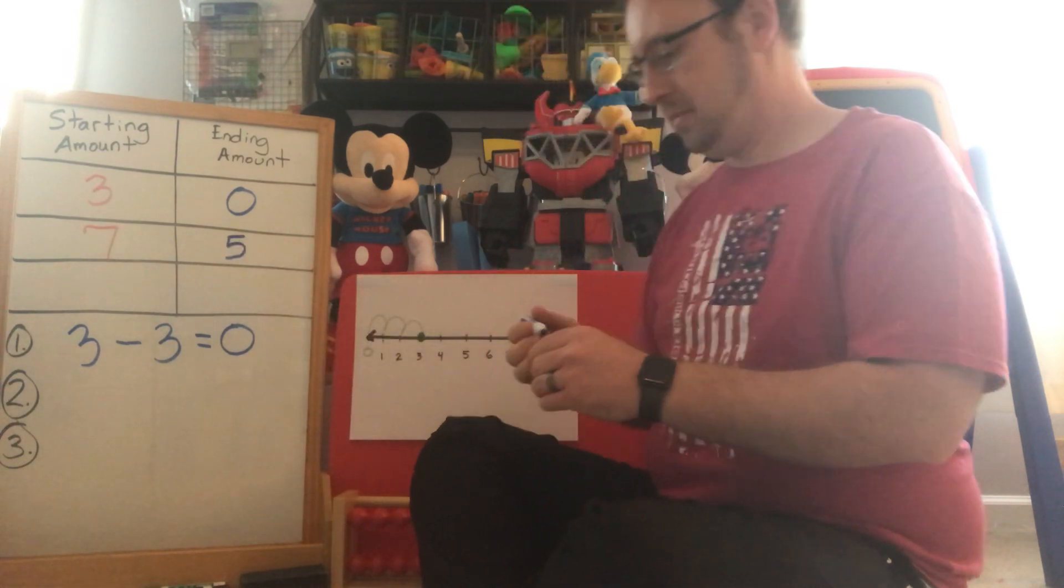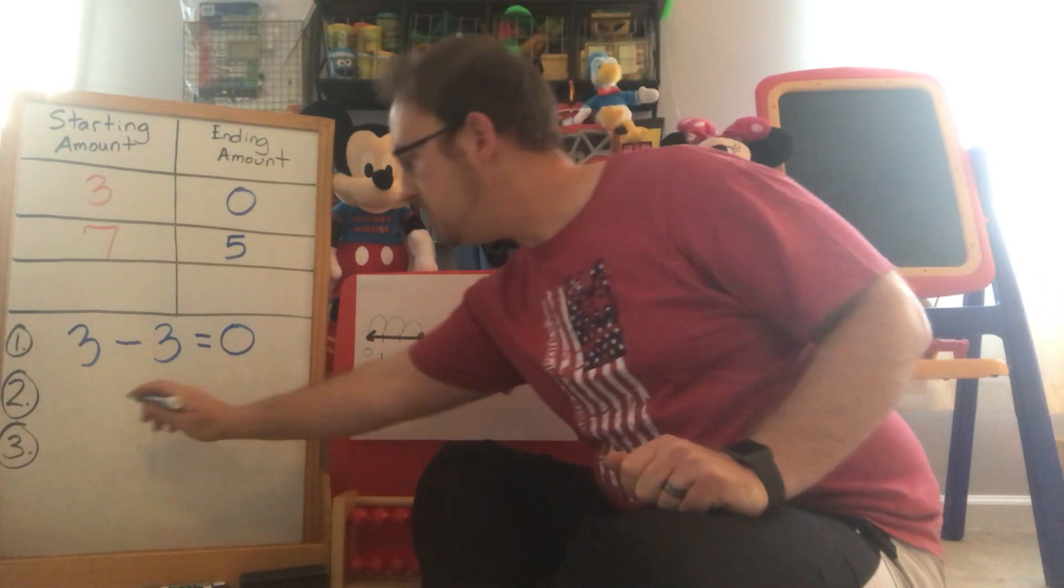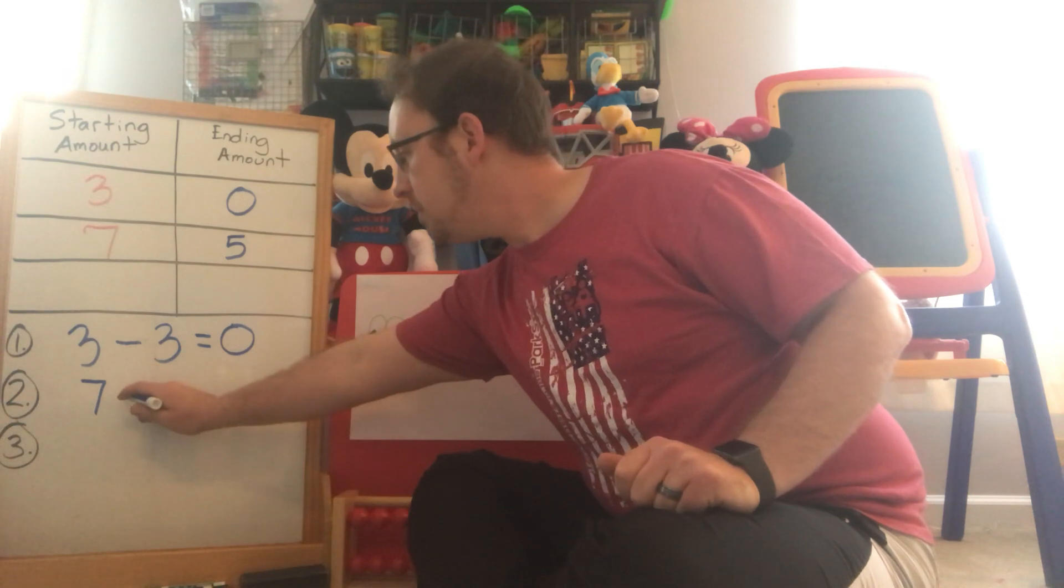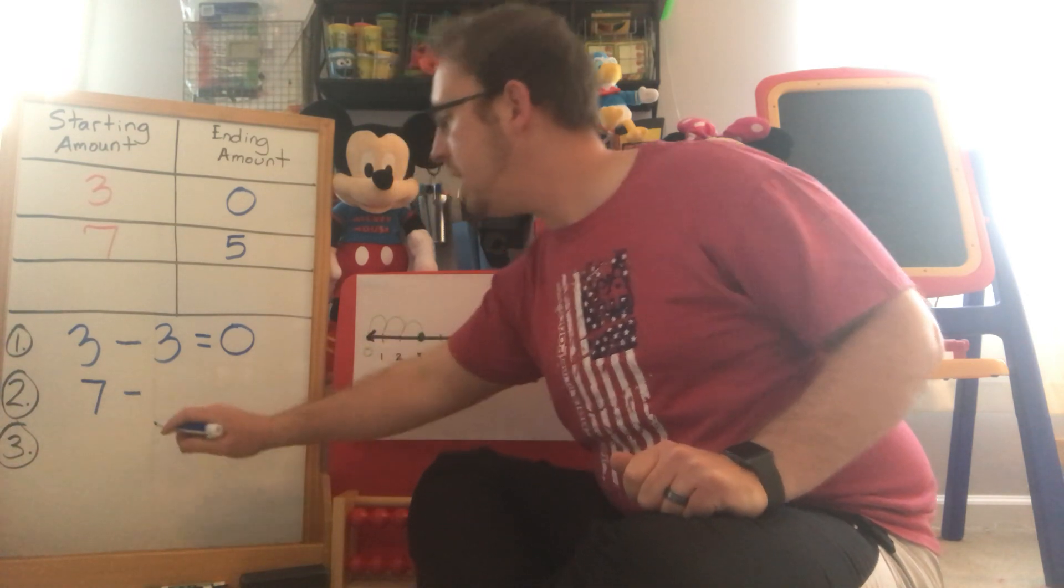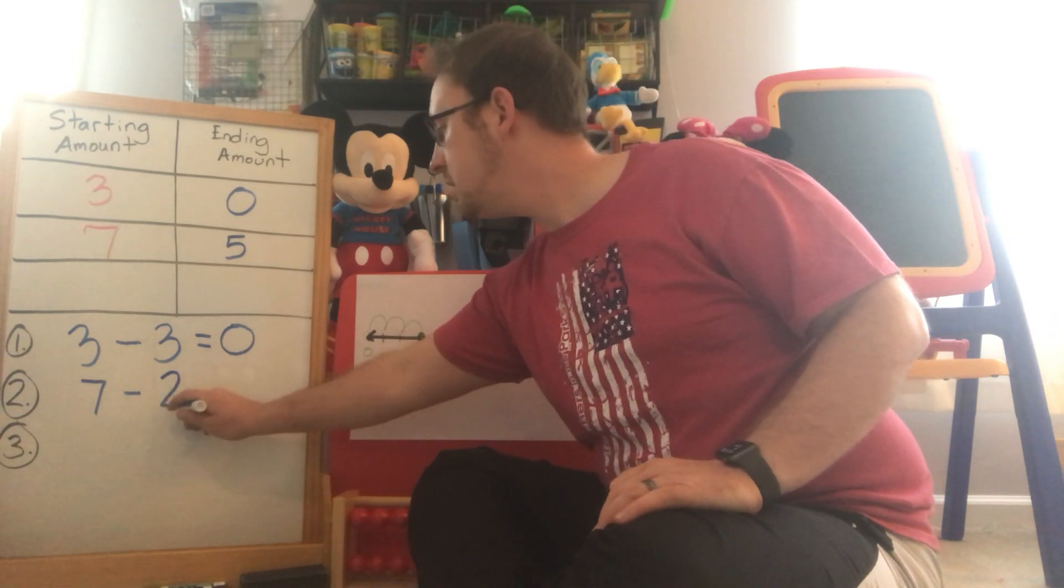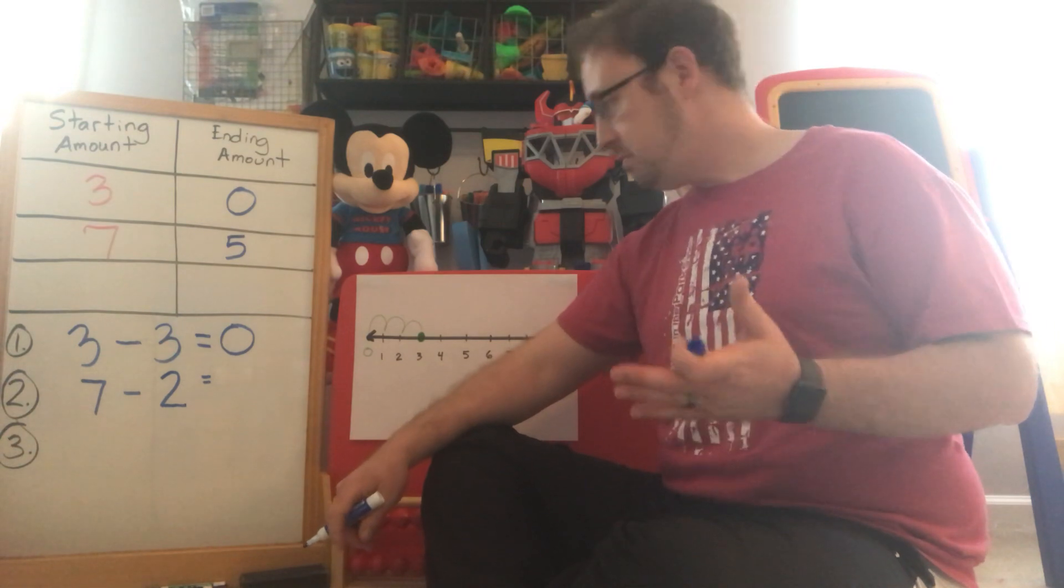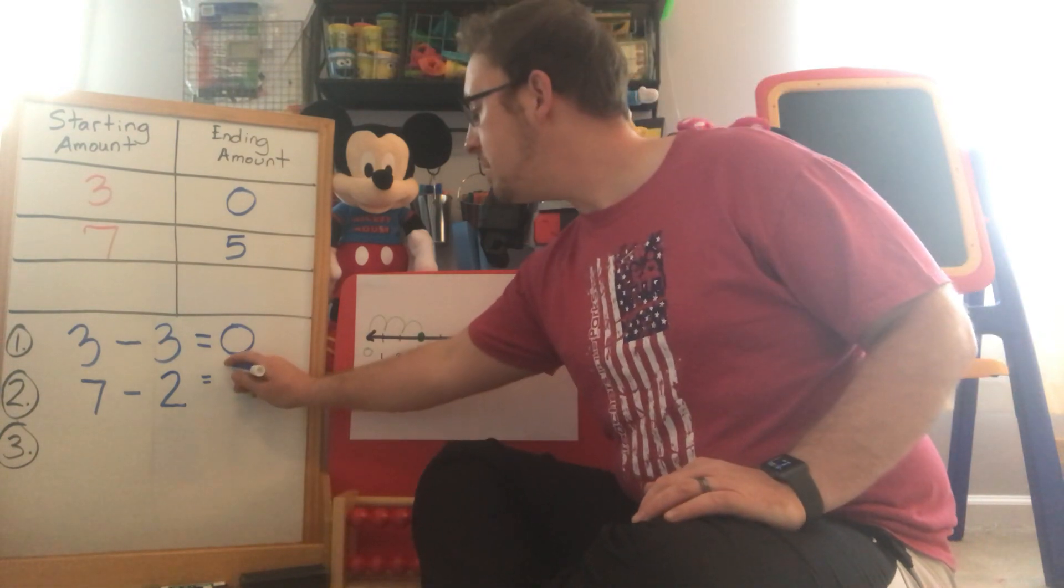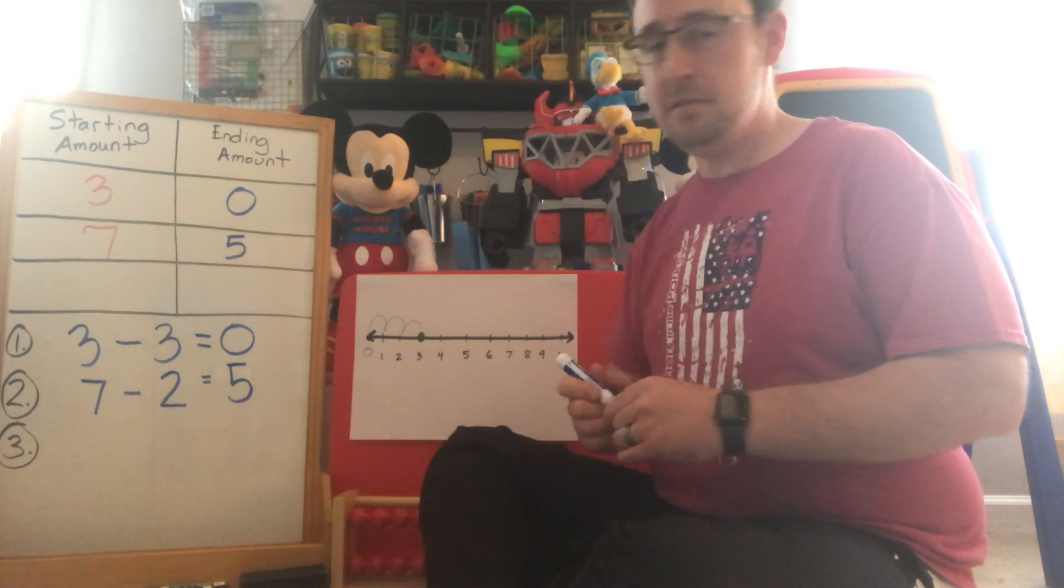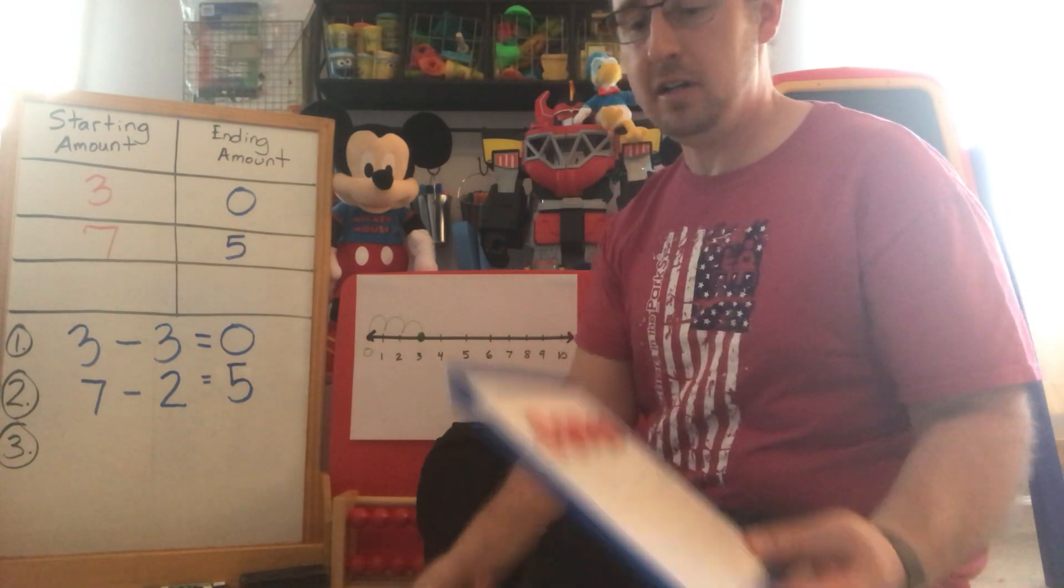Okay. And if you are writing down your equations which I hope you are. My second equation I started with seven. Put my minus symbol and we subtracted two. I rolled a two on my dice so we're taking away two. And after the equal sign we were left with five. Seven minus two is equal to five. There we go. Easy peasy.